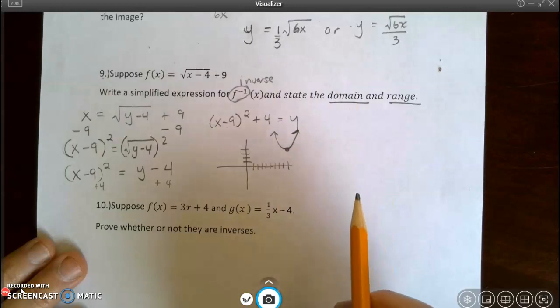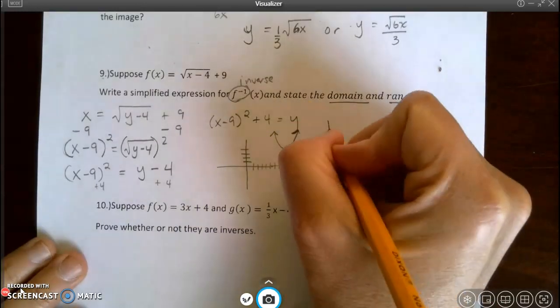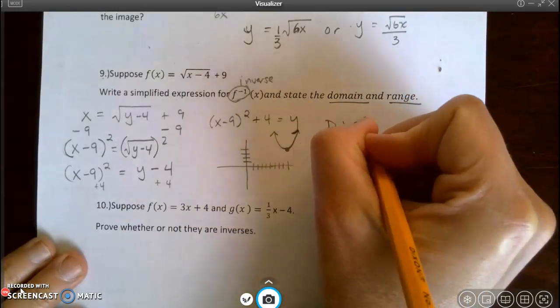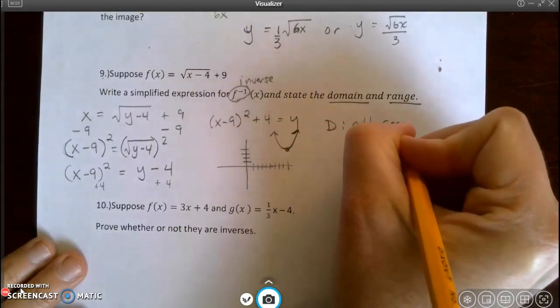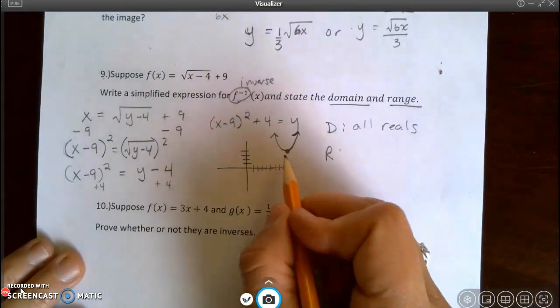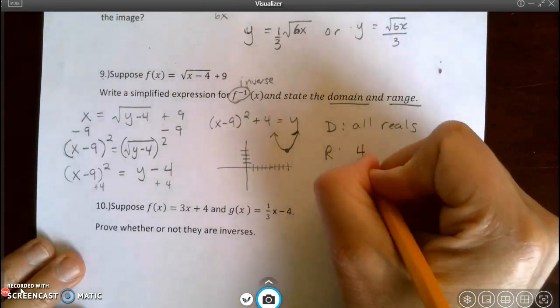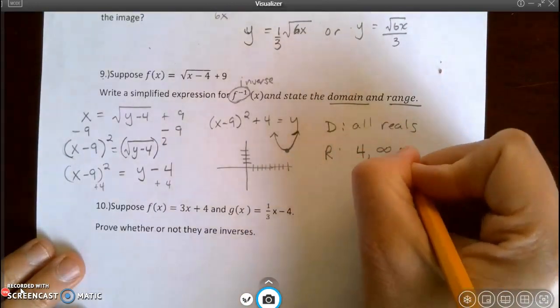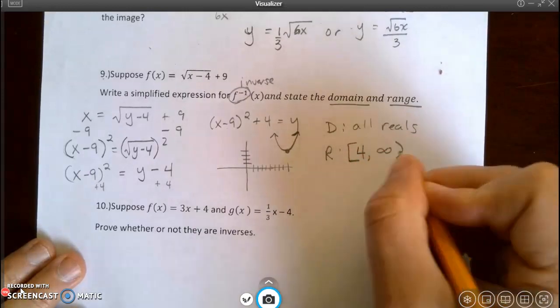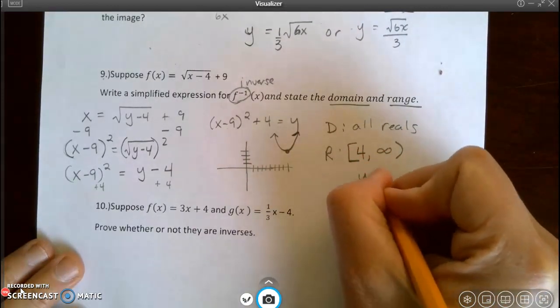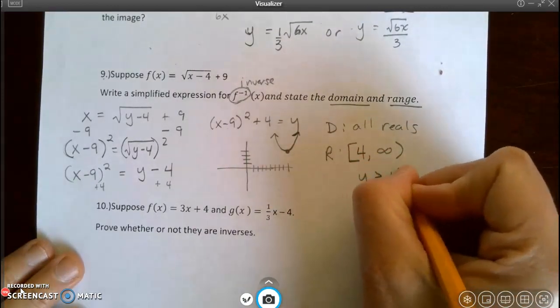The domain and range are now very clear. It's a quadratic. My domain is all reals. And my range starts at 4 and goes to infinity. Or I can say y is greater than or equal to 4.